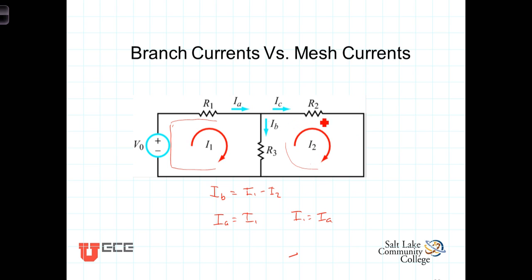And similarly over here, this mesh current I2 is the same as the branch current I sub C, so we could say that I2 is equal to I sub C. Thus we can define any branch current in this circuit in terms of the mesh currents I1 and I2.